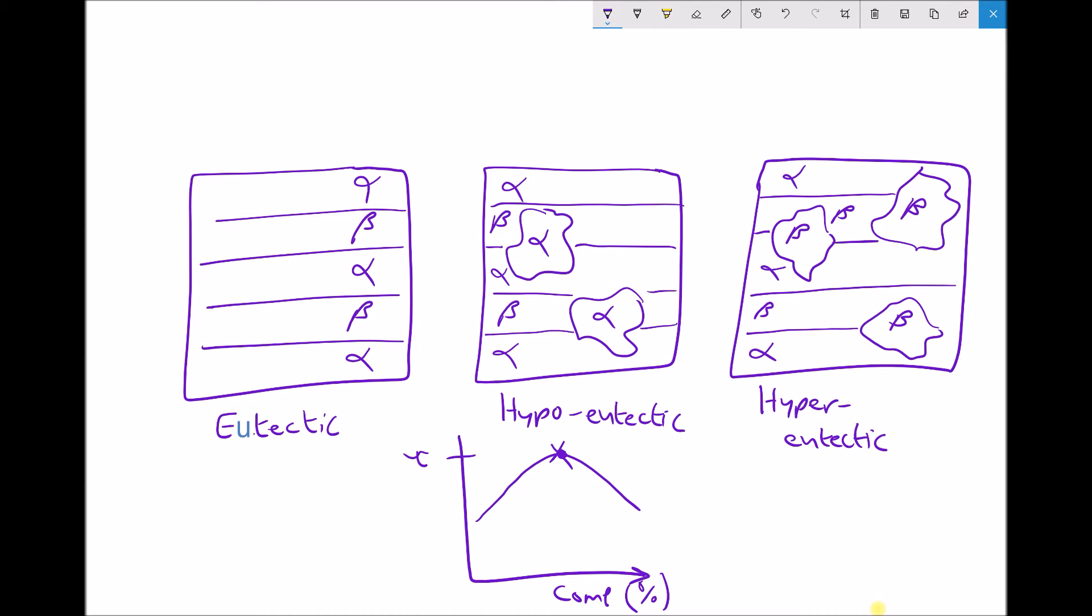What this means in the context of this example, is if we're manufacturing solder, then ideally for maximum strength, we want that solder to be a composition of 61.9% tin and 38.1% lead.